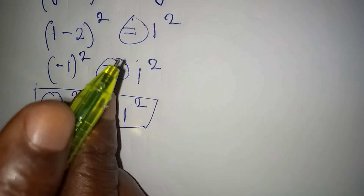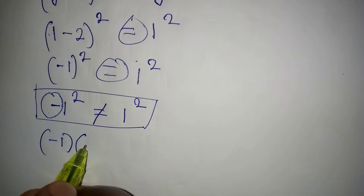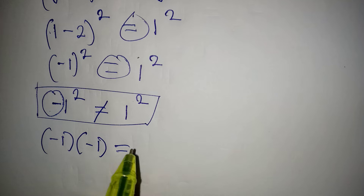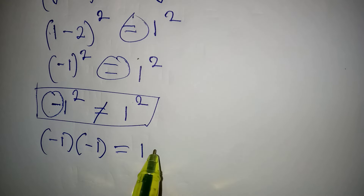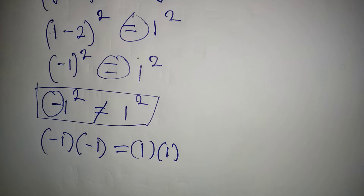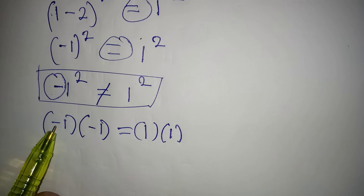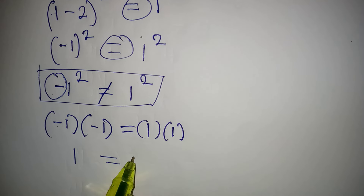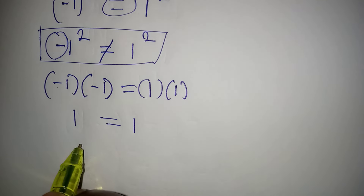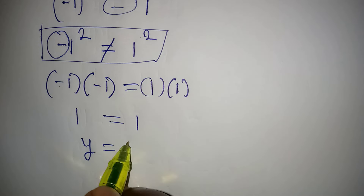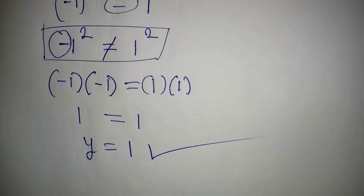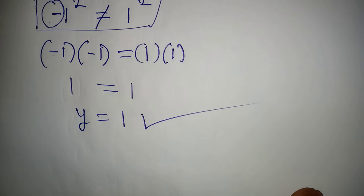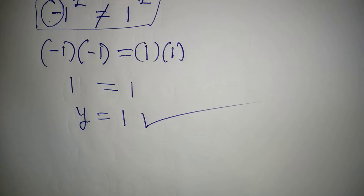With the bracket, minus 1 squared is minus 1 times minus 1, and 1 squared is 1 times 1. Negative times negative is positive, so both sides equal 1. This confirms that y equal to 1 satisfies the equation. Thank you for watching, and do subscribe to my channel for more videos like this.